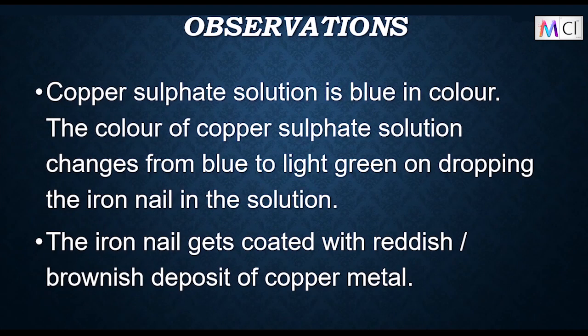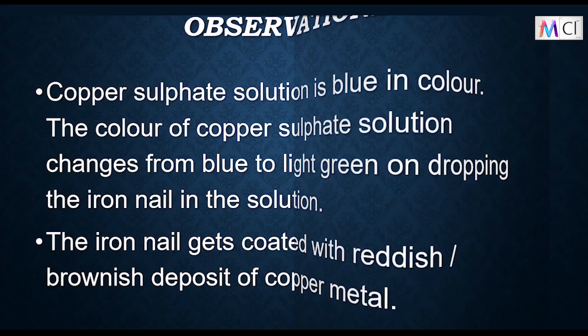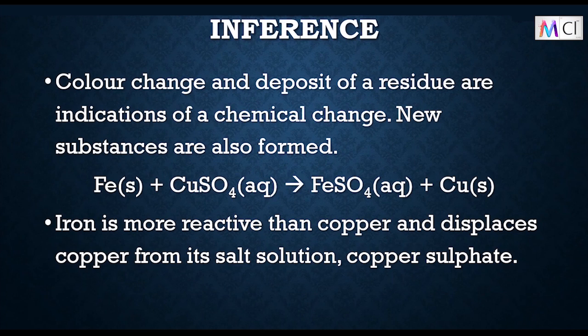Observations: Copper sulphate solution is blue in colour. The colour changes from blue to light green on dropping the iron nail in the solution. The iron nail gets coated with a reddish-brown deposit of copper metal. Inference: Colour change and deposit of a residue are indications of a chemical change. Iron + copper sulphate → iron sulphate + copper. Iron is more reactive than copper and displaces copper from copper sulphate solution.